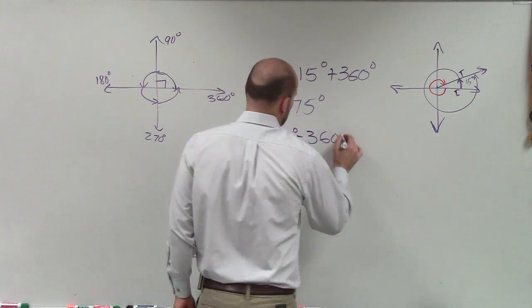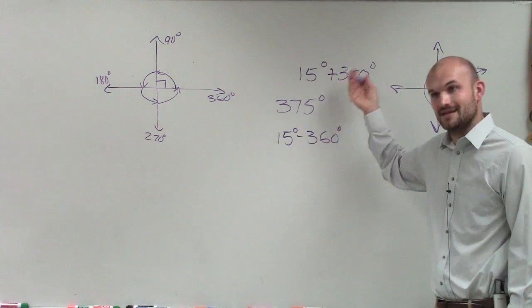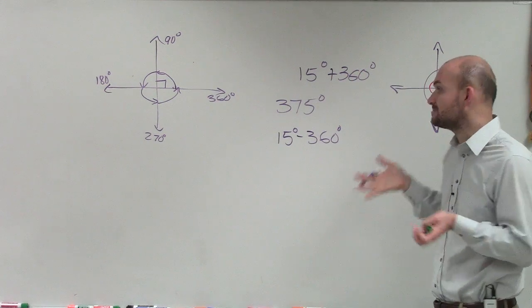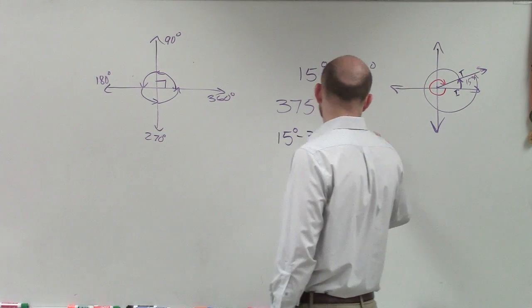So now I subtract 360 degrees, all right, so you can add in this case and subtract. That's going to give you your smallest positive and negative. So therefore, this is going to equal negative 345.